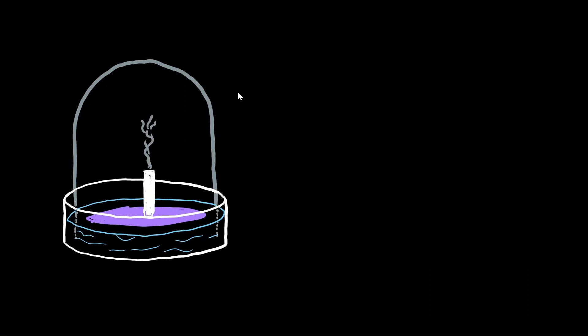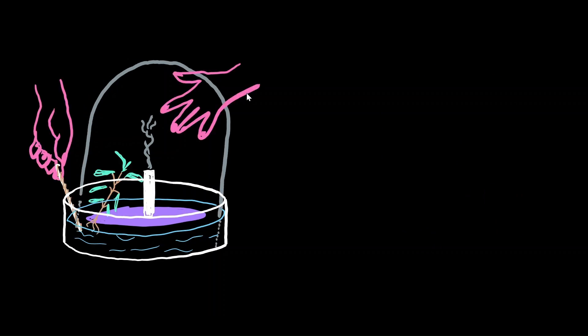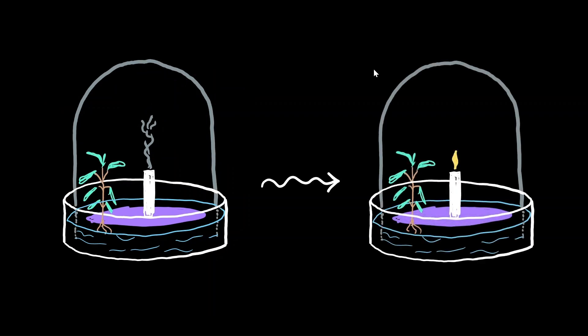In the next experiment, he took an extinguished candle and introduced a mint plant into it. He very carefully slid the plant inside without opening the bell jar completely. He then proceeded to light the candle using the magnifying glass. He noticed that the candle did not get extinguished — the candle he had lit continued to burn.